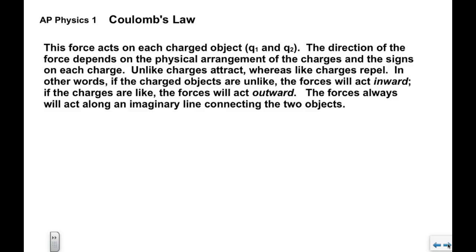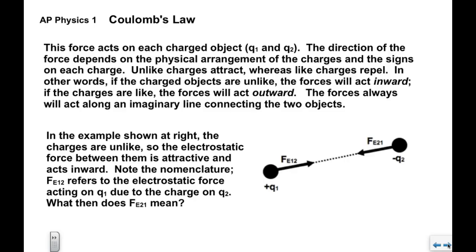The forces will always act along an imaginary line that connects the two objects. In this example, the charges are unlike — positive Q1 and negative Q2 — so the electrostatic force is attractive and acts inward, somewhat like a tension force. The nomenclature Fe12 refers to the electrostatic force on Q1 due to Q2; Fe21 means the force on Q2 due to Q1. Note that the magnitudes of these two forces are exactly the same — it doesn't matter which one has a bigger charge.